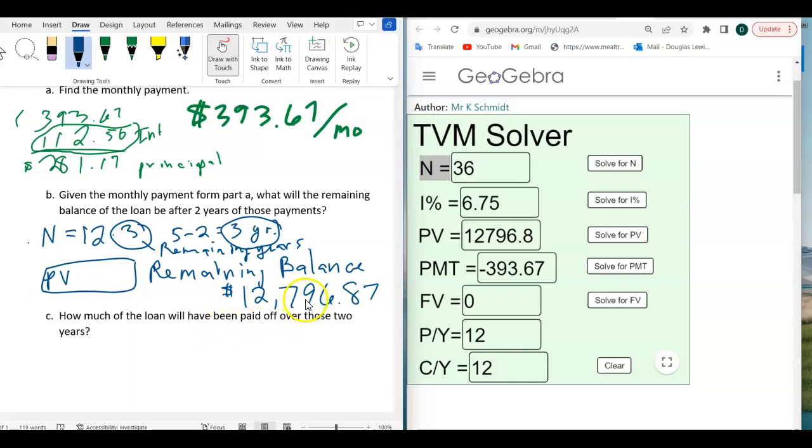So there's our remaining balance. We still owe $12,796.87. Now, how much of the loan will have been paid off over those two years? Now, you were making a lot of payments, but all of that money didn't go to principal. So notice that the loan originally was $12,000 or $20,000. So we had a $20,000 loan. Now, the remaining balance is $12,796.87.